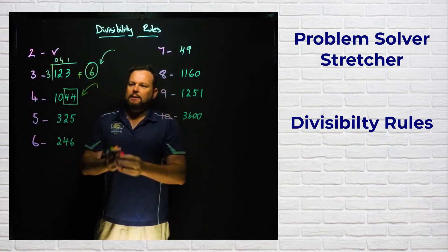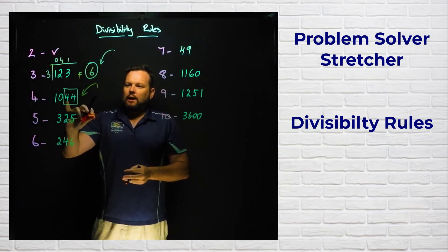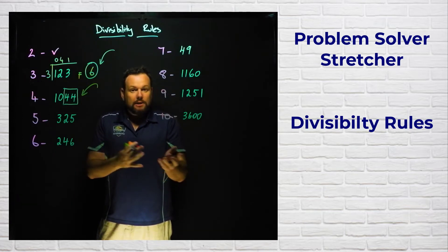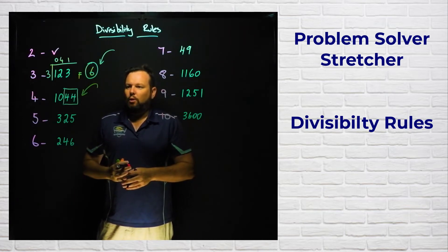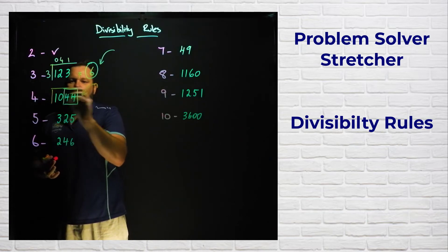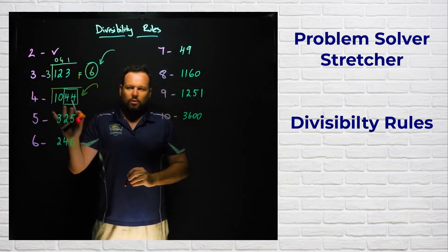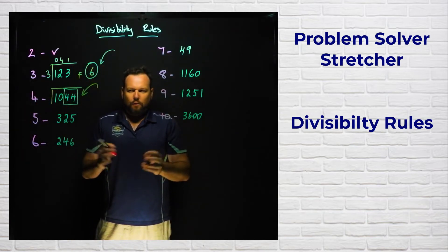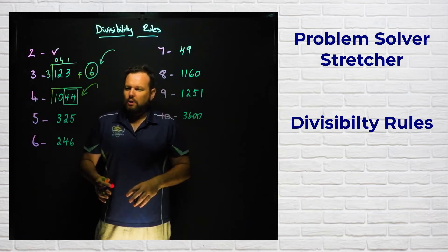The rule for four is if the last two digits are divisible by four, that means the whole number is divisible by four. So here I can see that yes, four does go evenly into 44 eleven times, which means that I could divide this whole thing by four. I'm not going to do it now because we're going to move on.